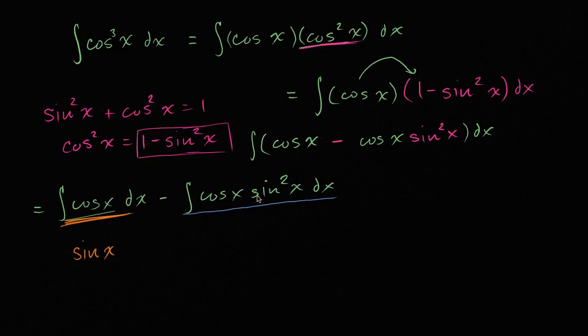So that's sine of x. And then what do we have going on over here? Well, you might recognize, so I have a function of sine of x. I'm taking sine of x and I'm squaring it. And then I have sine of x's derivative right over here. So this fits the, I have some derivative of a function, and then I have a function of that function.